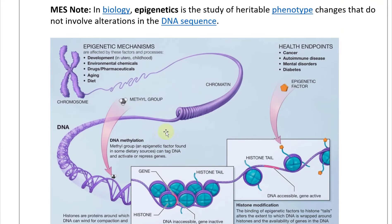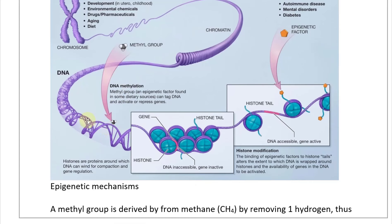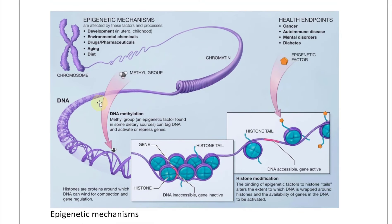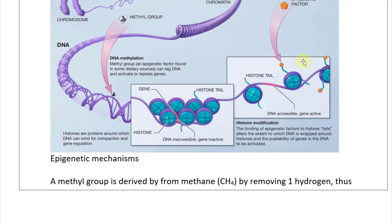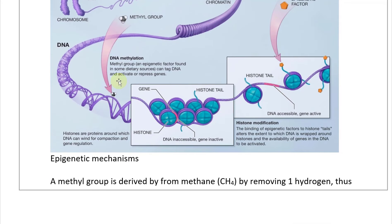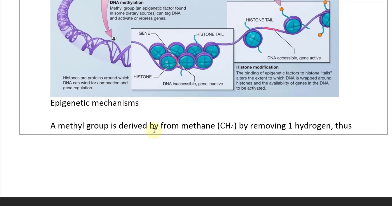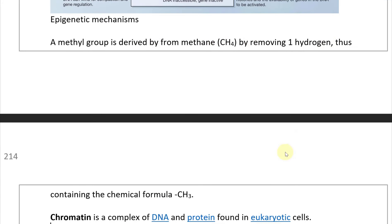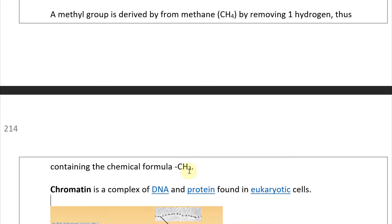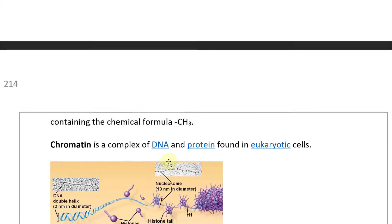This methyl group added to DNA can modify the endpoints without modifying the exact sequence. Sometimes you can have negative effects based on factors that attach to proteins the DNA spools around. A methyl group is derived from methane (CH4) by removing one hydrogen, giving the formula CH3.